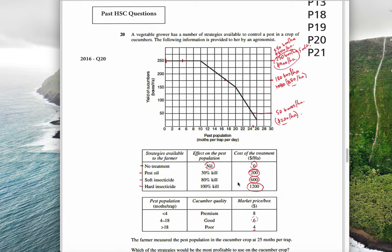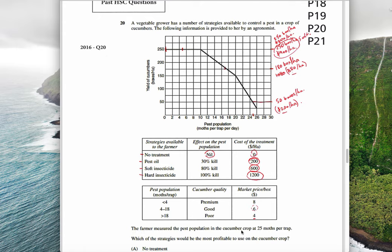Let's read the question. The farmer measured the pest population in the cucumber crop at 25 moths per trap. Which of the strategies would be the most profitable to use on the cucumber crop? So first, there's 25 moths per trap. This is where we are. This is the yield we're going to get - 50 boxes. What I've done here is you're going to get 50 boxes per hectare at 25 moths. The pest population is higher than 18, so you're going to get only $4 per box. 50 boxes times 4 is going to be $200. We're not treating anything, so there's no cost to treat them.